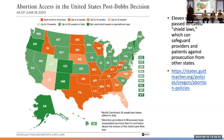Eleven states have passed shield laws, which can safeguard providers and patients against prosecution from other states. This is playing out in political debates — people are trying to prosecute folks even for crossing state lines to get abortion access. You can look at goodmarker.org to stay up to date.